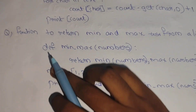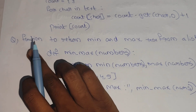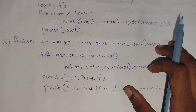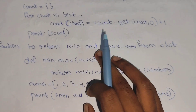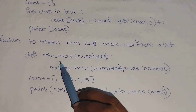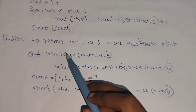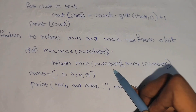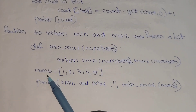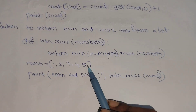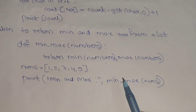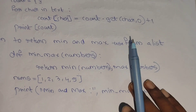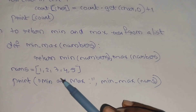Next question: write a Python program using a function to return the minimum and maximum from a list. The function takes numbers as input and returns min(numbers) and max(numbers). Then print the minimum and maximum of the number list.